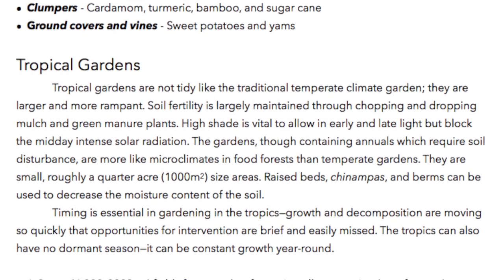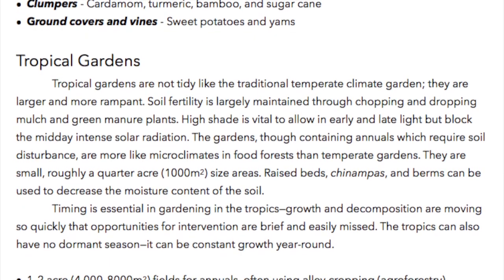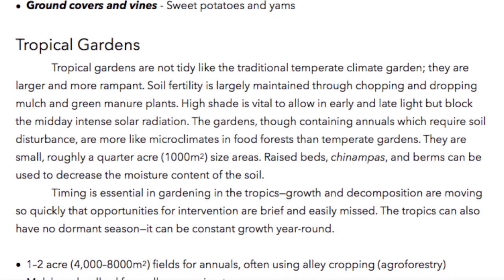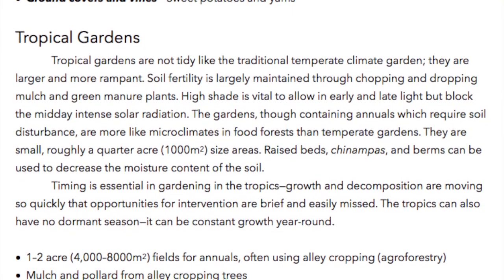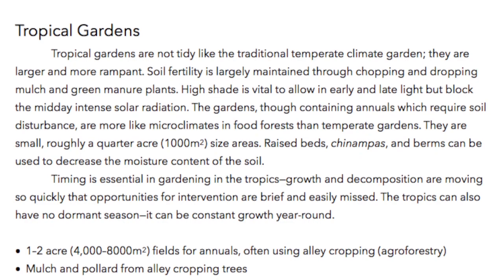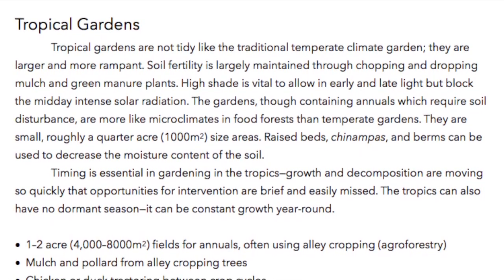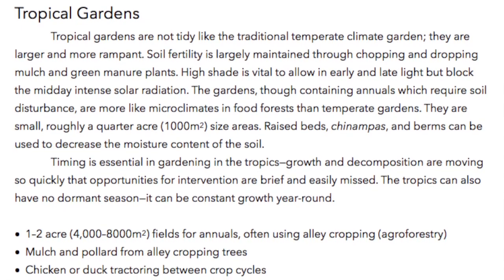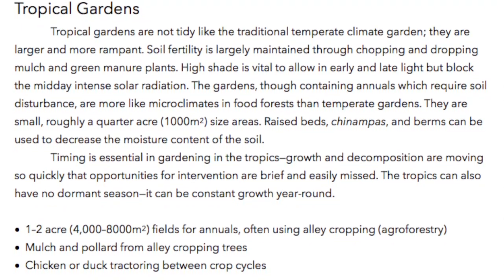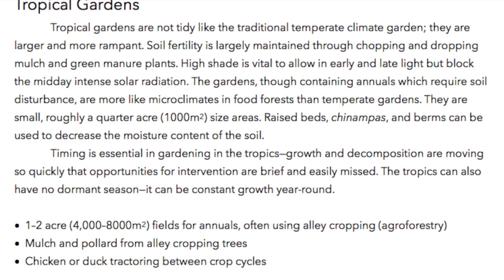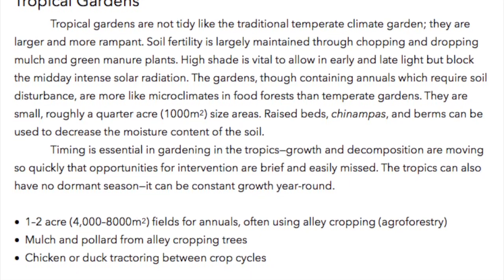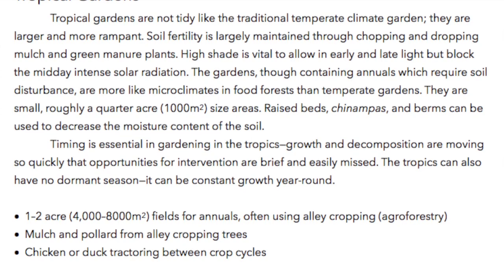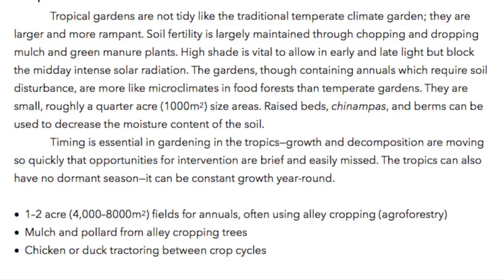Raised beds, chinampas, and berms can be used to decrease the moisture content of the soil. Timing is essential in gardening in the tropics — growth and decomposition are moving so quickly that opportunities for intervention are brief and easily missed. The tropics can also have no dormant season; it can be constant growth year round. One to two acres, 4,000 to 8,000 square meter fields for annuals often use alley cropping agroforestry.